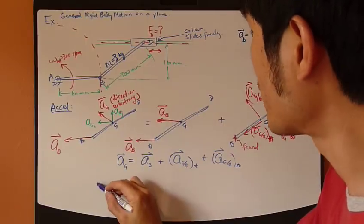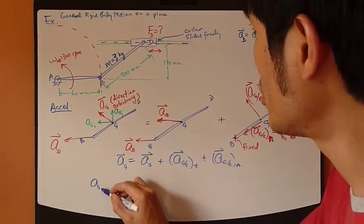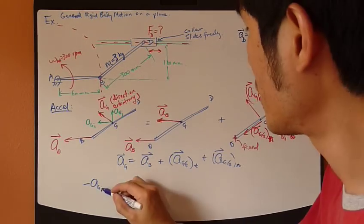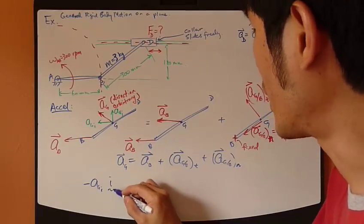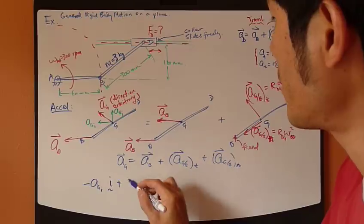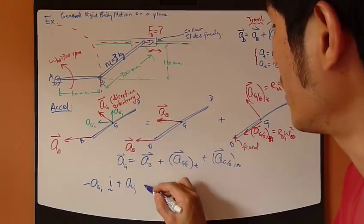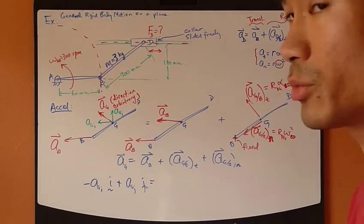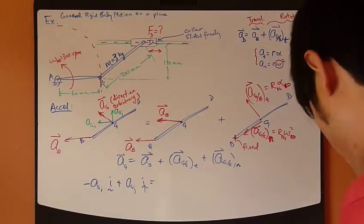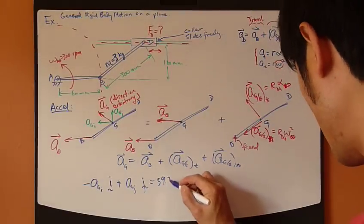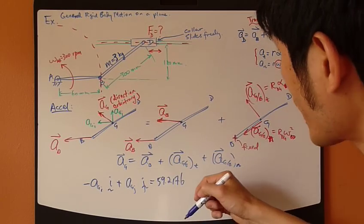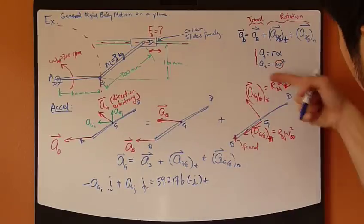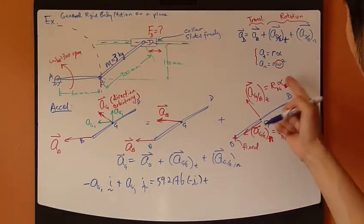So, for A_G vector, I have A_G of I, just negative because it points to the left. A_G of I component, and then plus this point up, so A_G J. The J direction equals A_B vector, which has been found before, and that is 59.2176. And it is going to the left, so negative I plus this guy right here, it points in this direction. So, R, alpha, and R,